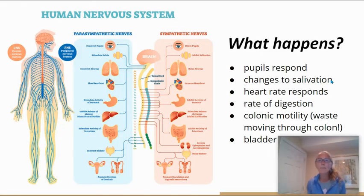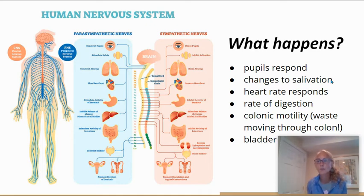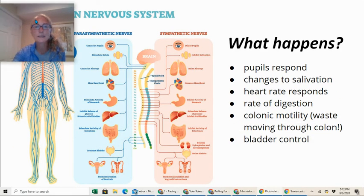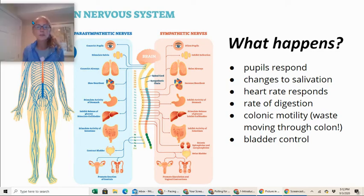So what happens when either your sympathetic or parasympathetic is being activated? Well, your pupils will change — they'll respond to either the emergency event or the relief. There will also be changes to your salivation, your heart rate, your digestion, your colonic motility — which is basically all the waste moving through your colon — and of course your bladder. You may want to pause the video here and take a look at what gets impacted by the sympathetic and parasympathetic nervous systems.